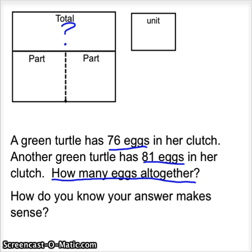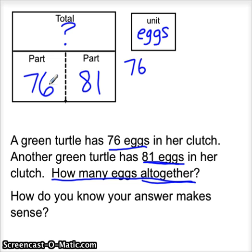The first part would be the number of eggs in the first clutch, 76 eggs. The second part is the number of eggs in the second clutch, which is 81 eggs. Our unit up here is eggs. Our two parts are 76 and 81. We are looking for the total. Our number model should be 76 plus 81 will give us the total number of eggs.